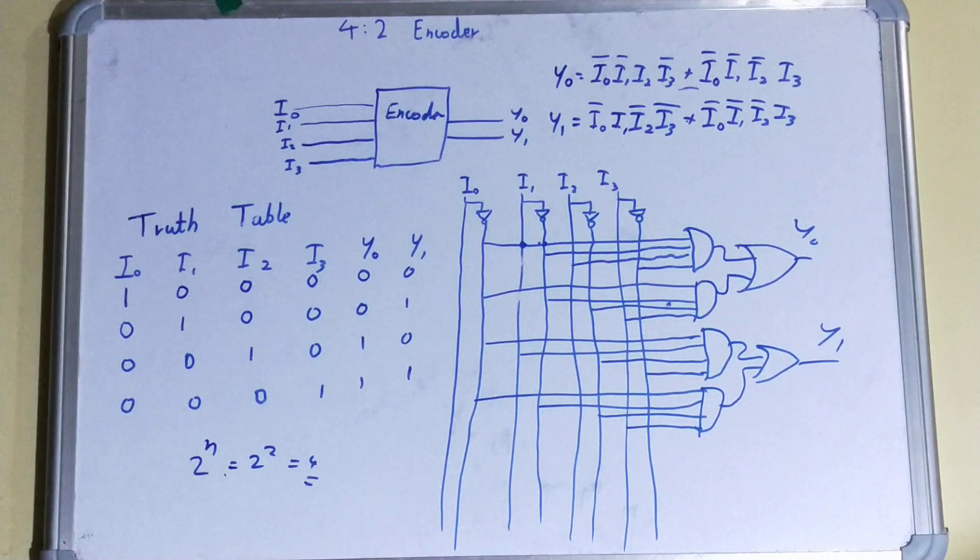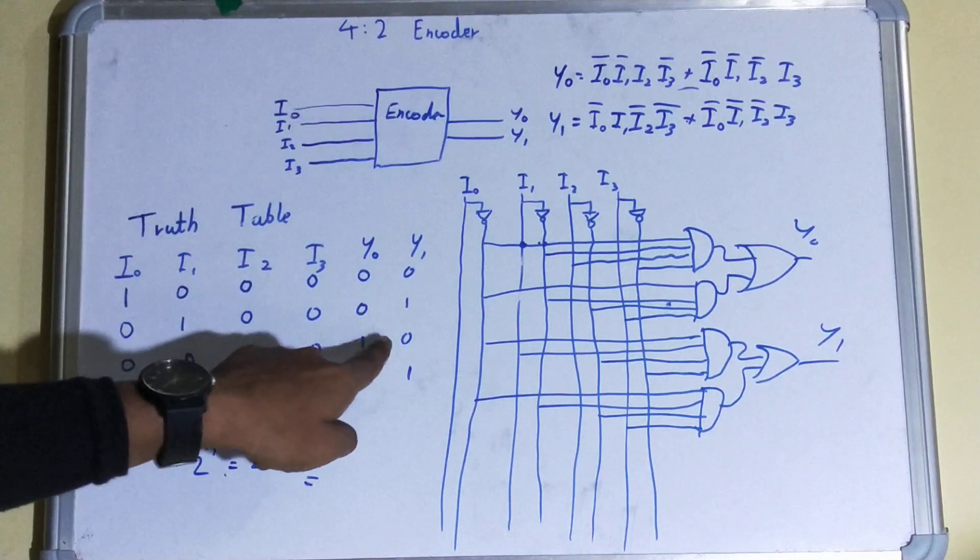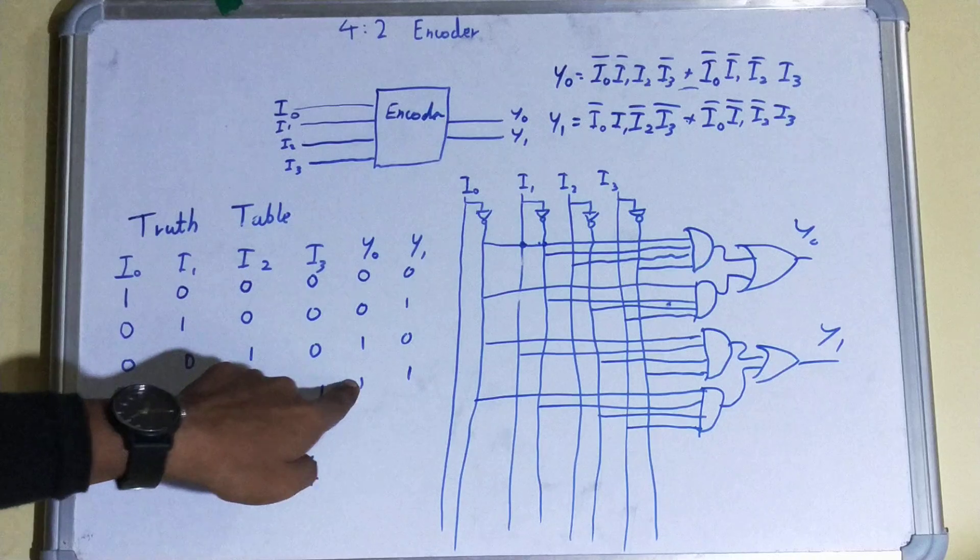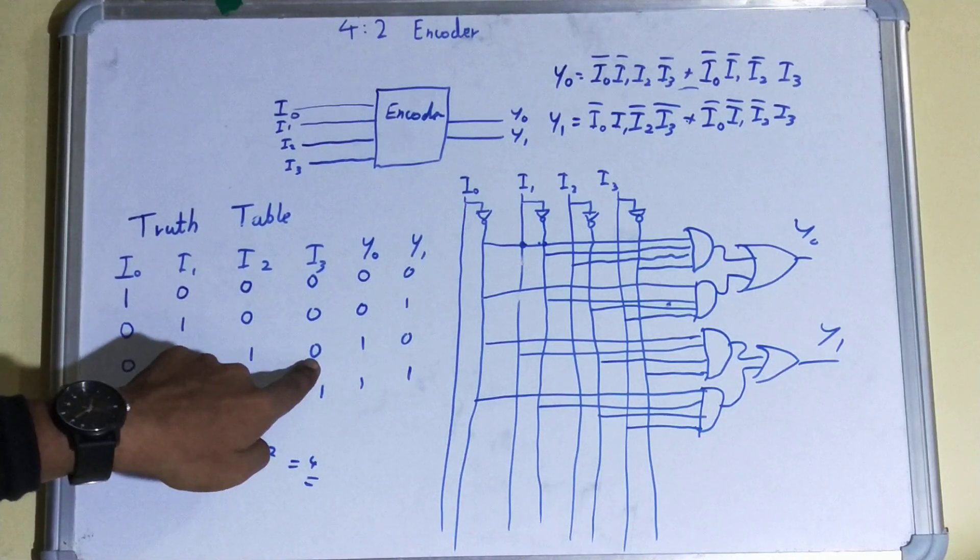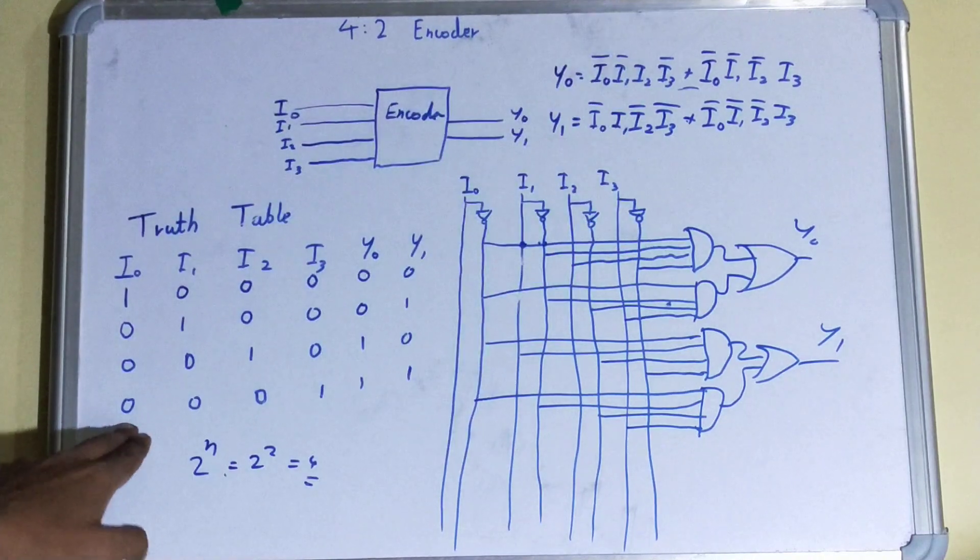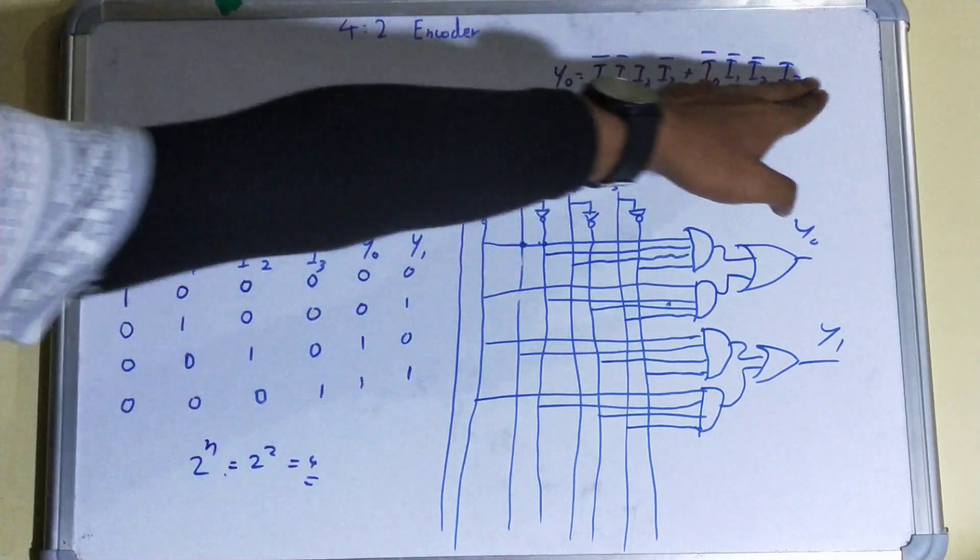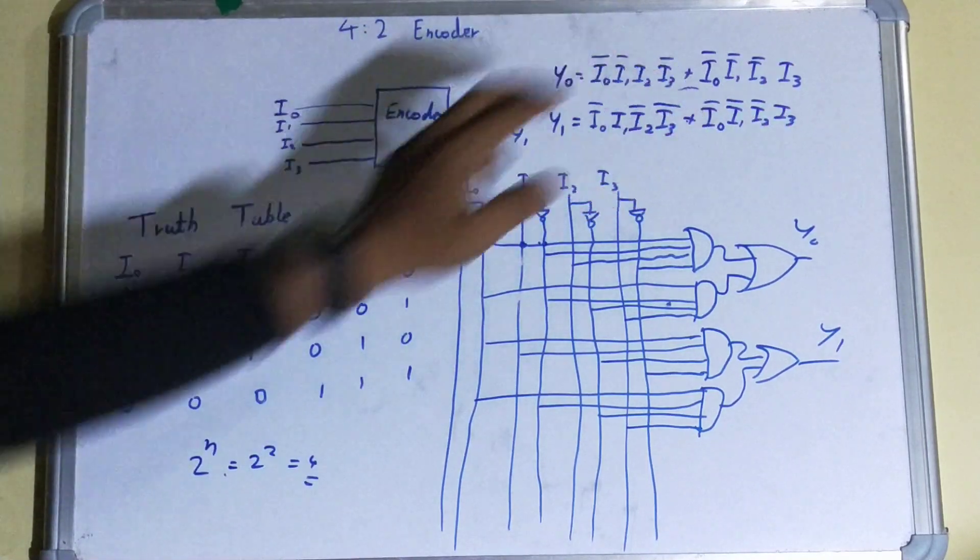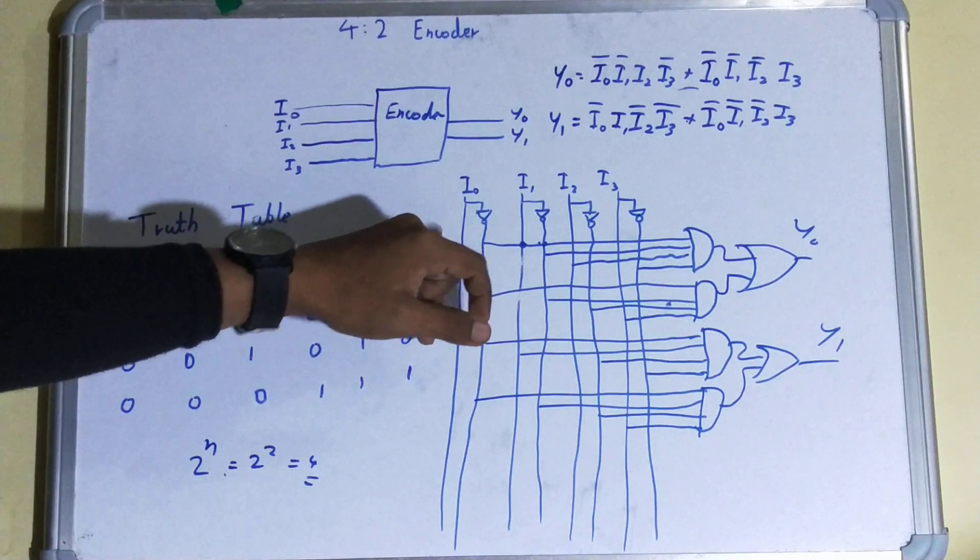Now the question is: how do you derive the equivalent Boolean expression? For taking out the Boolean expression, let's start with Y0. You can see it has minterms. So it will be I0̅·I1̅·I2·I3̅, plus the next one: I0̅·I1̅·I2̅·I3. I have added both because these are minterms of Y0.